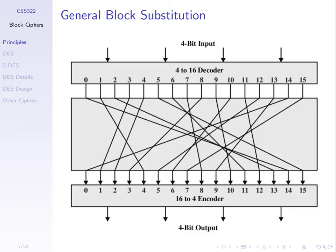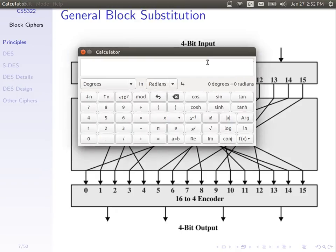How many possible substitutions, or possible keys, are there? With 16 possible inputs, the number of arrangements is 16 factorial — approximately 10 to the power of 13 possible transformations for a 4-bit block cipher. If we have a 64-bit input instead, we'd have 2 to the power of 64 factorial possible transformations — a number so large my calculator won't even attempt to solve it. That's good for having many possible combinations, but bad because that effectively becomes the number of keys.